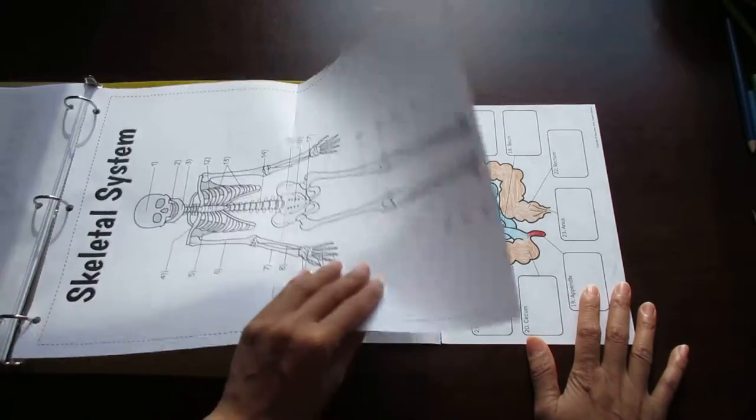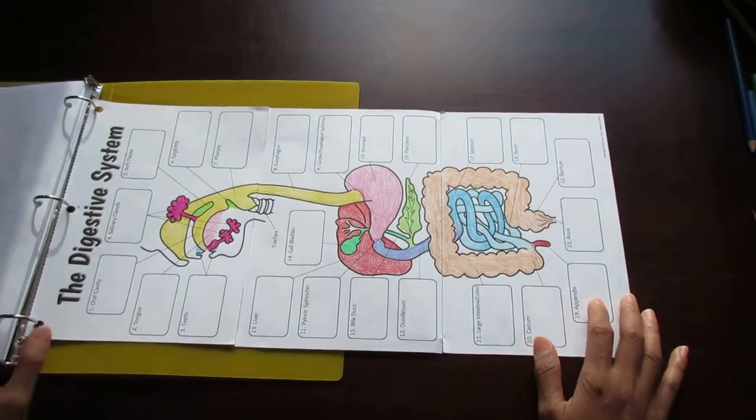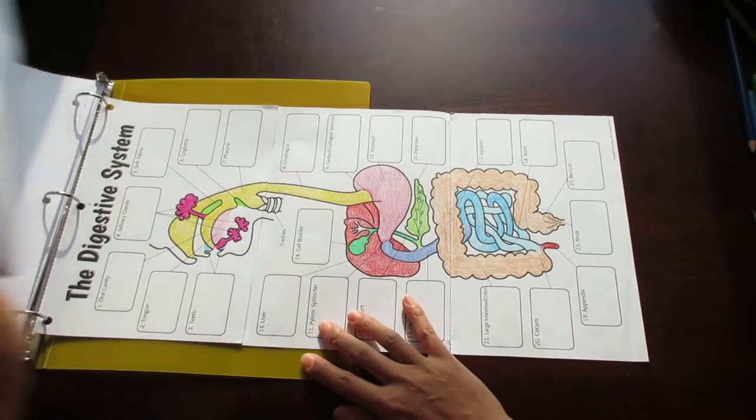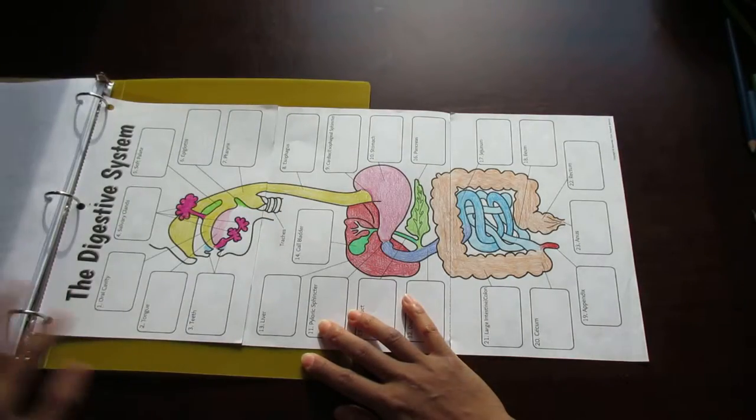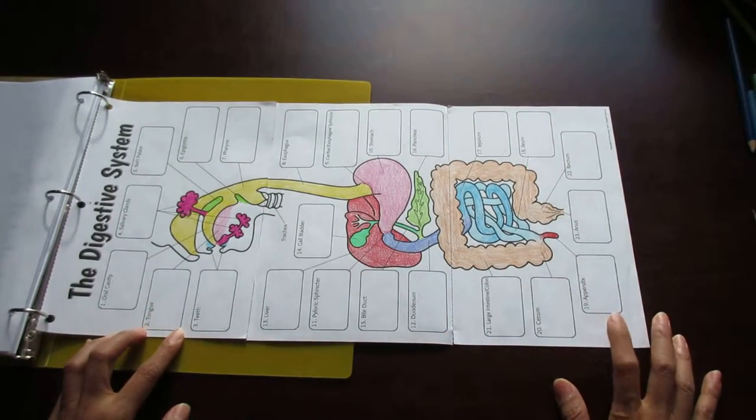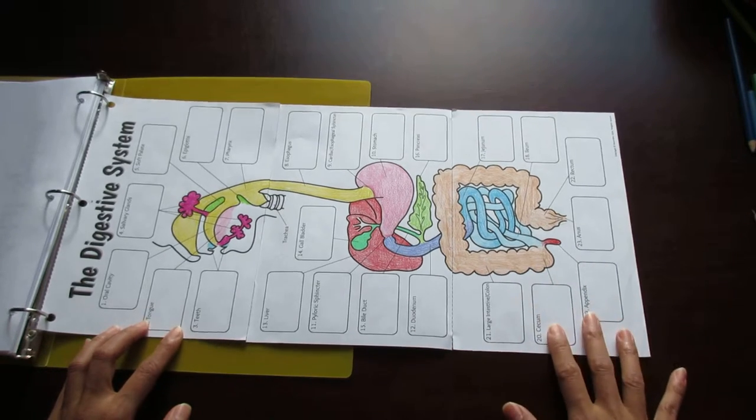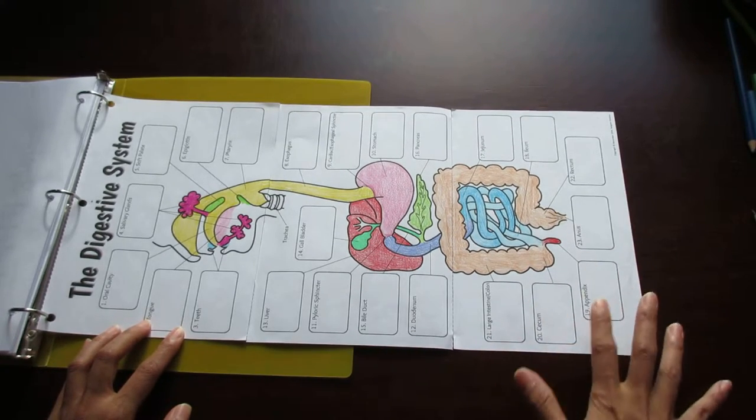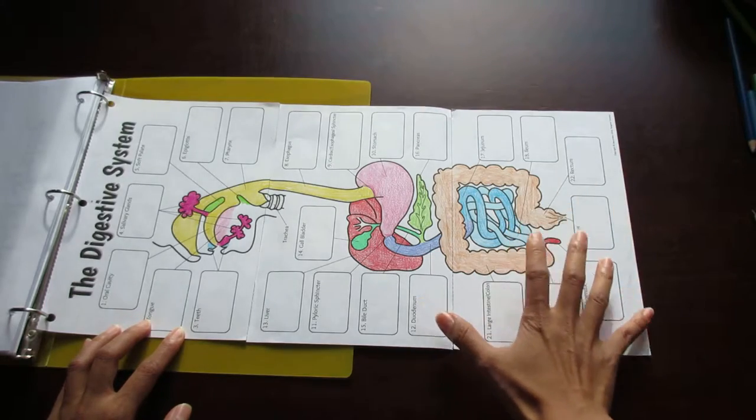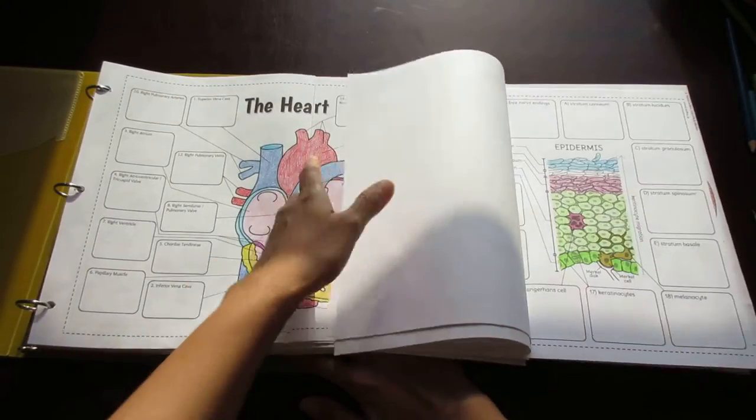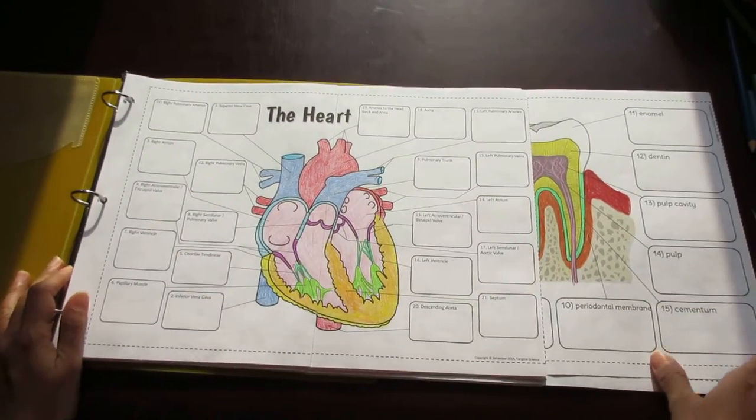And the last one here is the digestive system. As you can see, it's a little smaller than the other foldables. The reason is I've cut this out specifically for composition notebook size. Every single foldable that comes in this collection has two options: you can print and cut it out for composition notebook size, or you can always choose to put it in a binder.